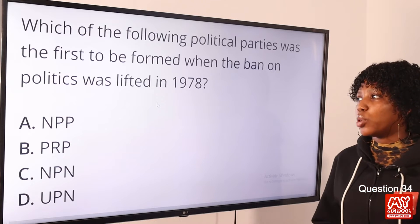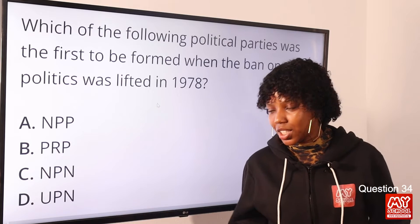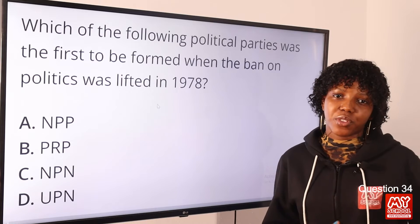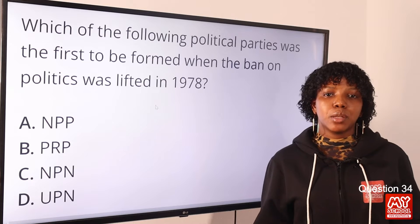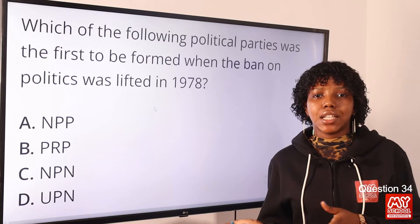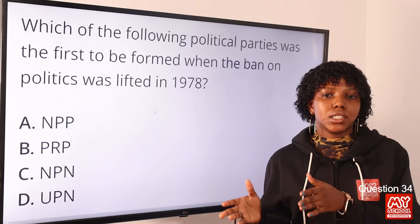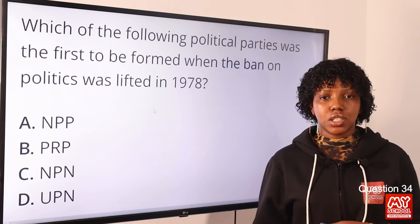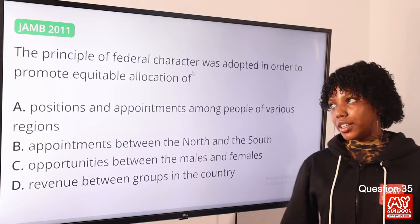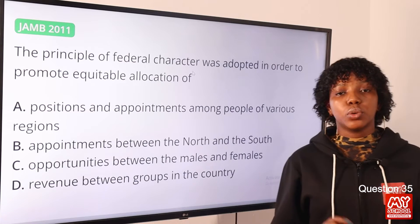Question 34: Which of the following political parties was the first to be formed when the ban on politics was lifted in 1978? The answer is option D, the Unity Party of Nigeria. On the 21st of September 1978, the ban on political activities was lifted, and the very next day, the 22nd of September 1978, the Unity Party of Nigeria was formed.